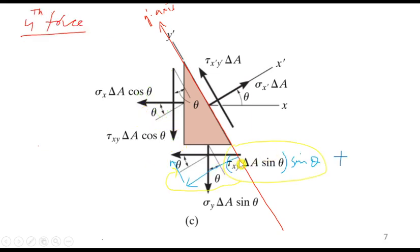The fourth force is resolved into two rectangular components along each axis. The component along the positive y' axis is written as positive, and its value is tau_xy times delta_A times sin theta times sin theta.